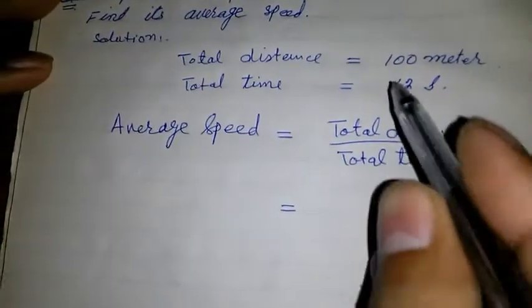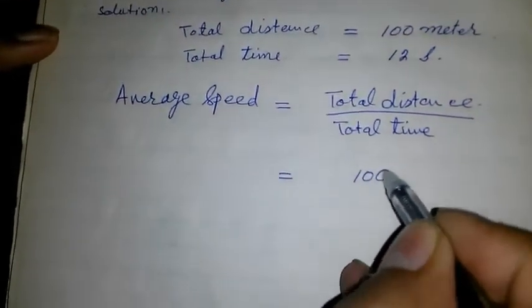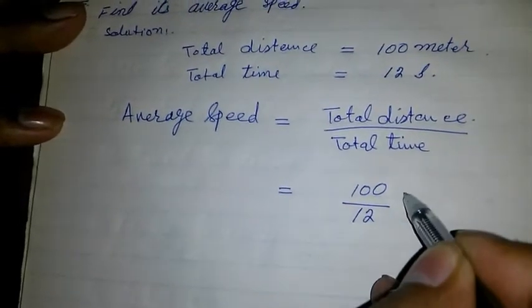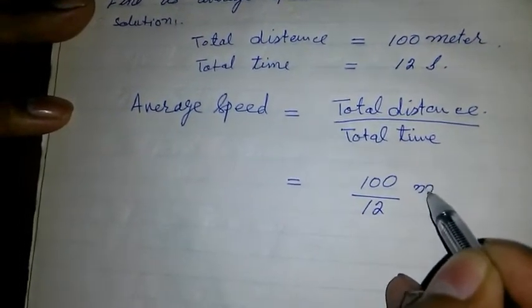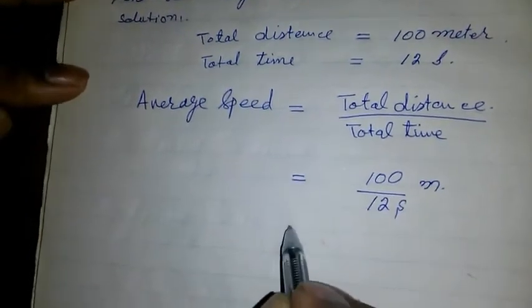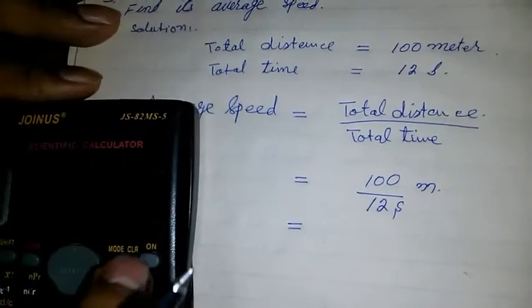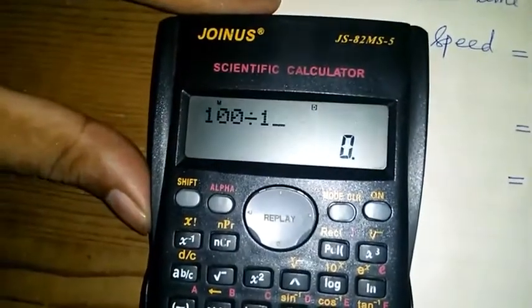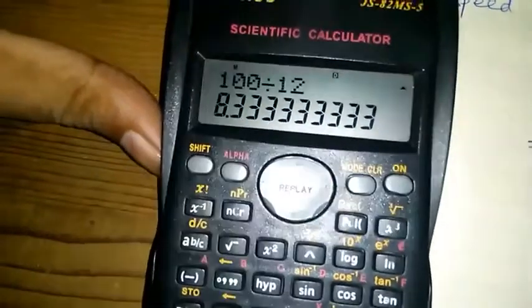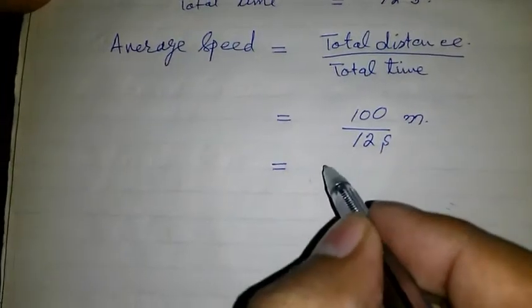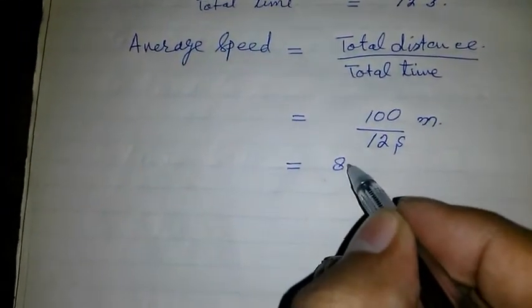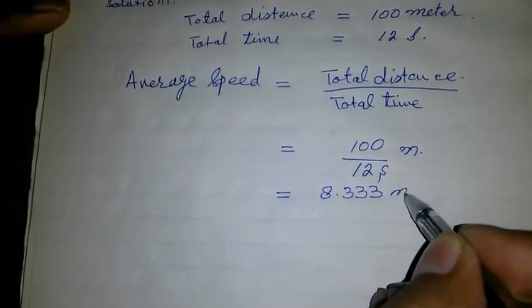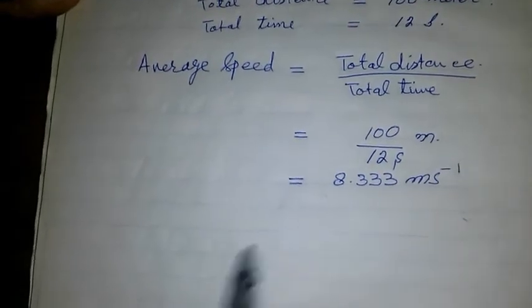Which is equal to 100 over 12 meter per second. We use a calculator. 100 divided by 12 is equal to 8.3333, so 8.333 meter per second.